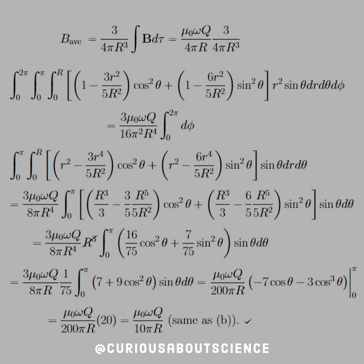And then after that, we just evaluate the integral. We see we get some cancellations again once we simplify. After that, we note that we have just 20, which simplifies to 100 in the denominator. And that leaves us with mu naught omega Q over 10 pi R, which is the same as b. So we're good to go yet again.